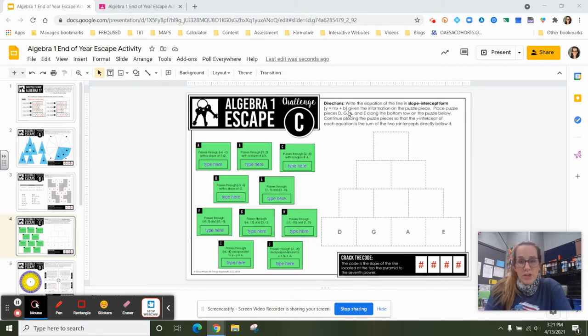So it looks like our directions are to write the equation of a line in slope intercept form, y equals mx plus b. They've given it to us here. It says using the information on the puzzle piece.